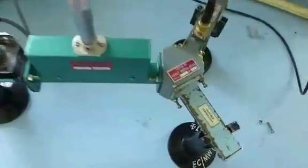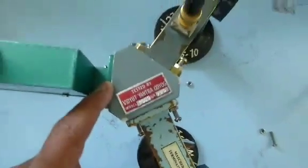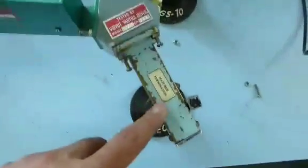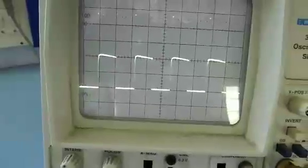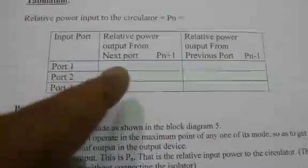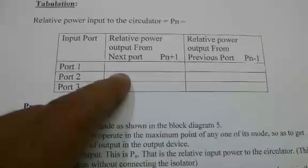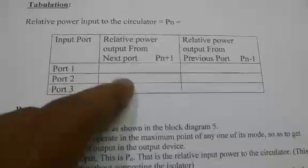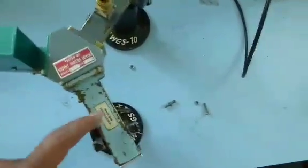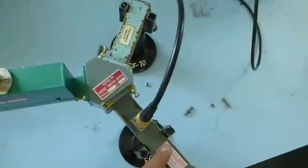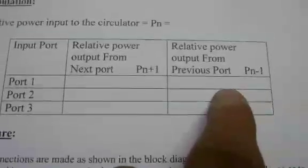The circulator replaces the isolator. With input given to port one and output seen at port two — the diode detector connected to port two, port three match terminated — we see the output is 2.2 divisions. This is noted as relative power output from port two. Then the diode detector is moved to port three and the matched termination to port two; with input still at port one, we get a very low output of around 0.1 divisions, which is noted as the port three output.